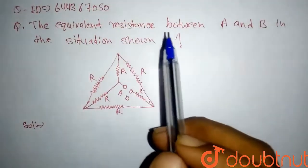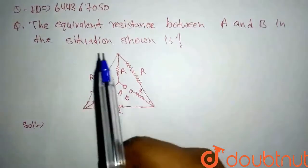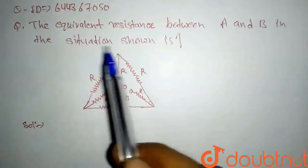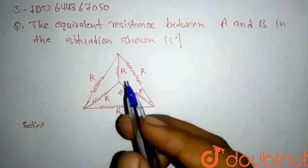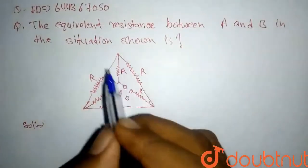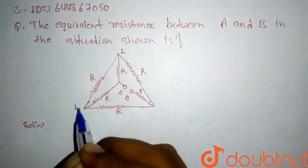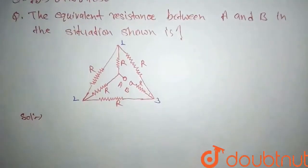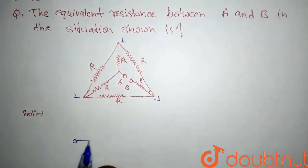We have to find the equivalent resistance between point A and B. First, we will name the vertices of the triangle — let's say this is one, this is two, and this is three (labeled as six initially). Now we will resolve the diagram.